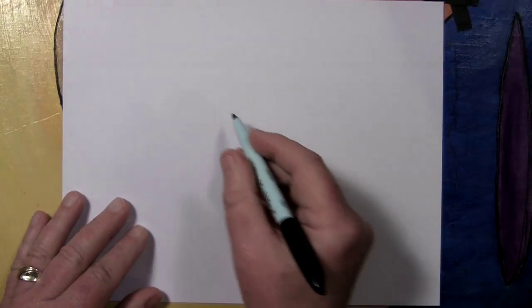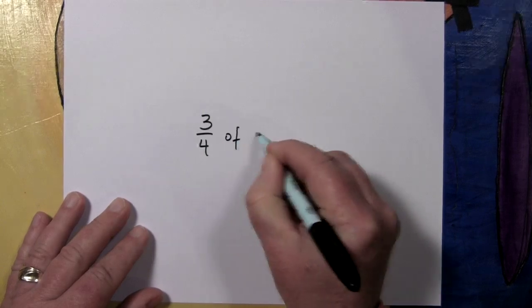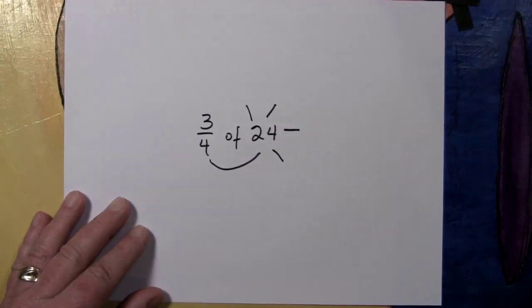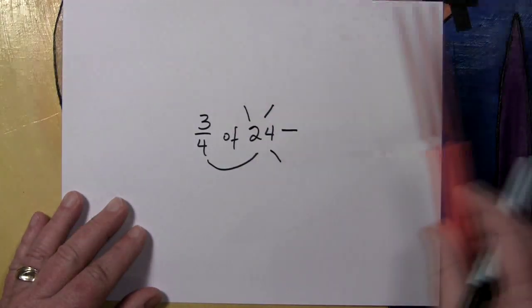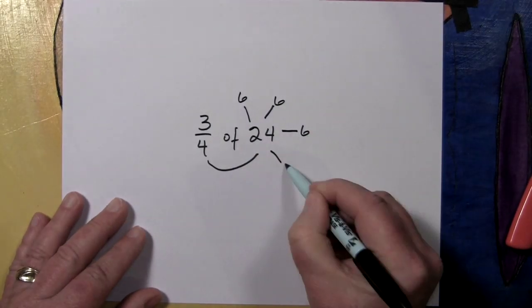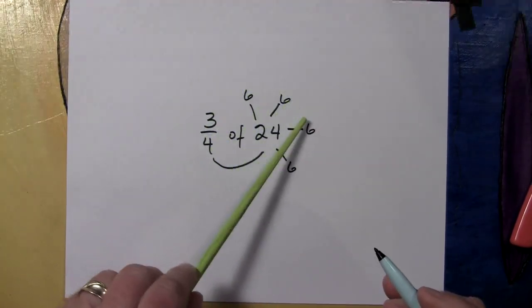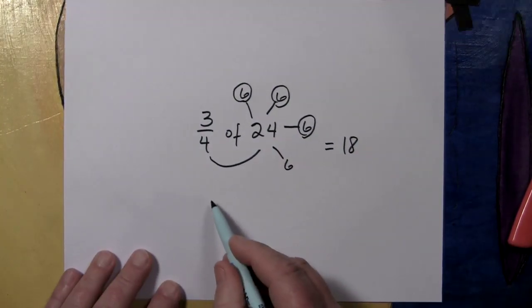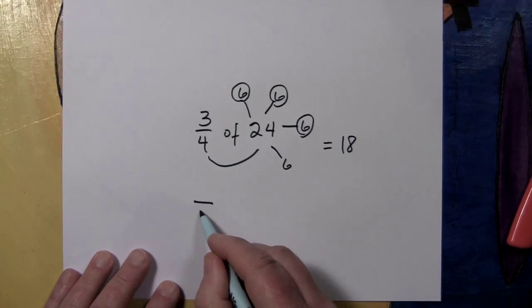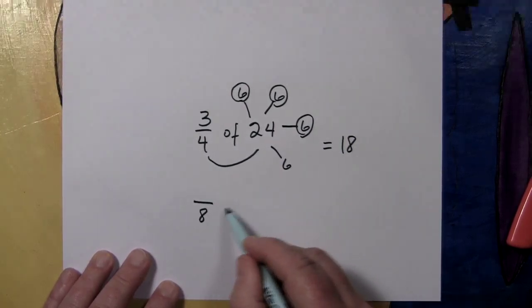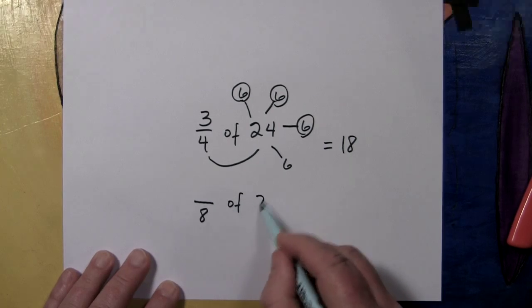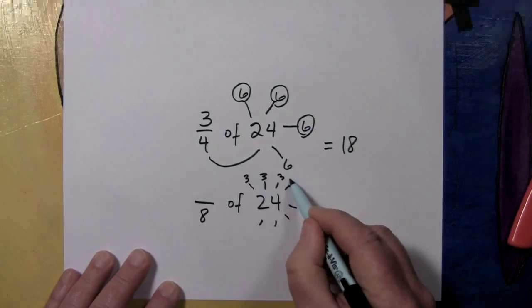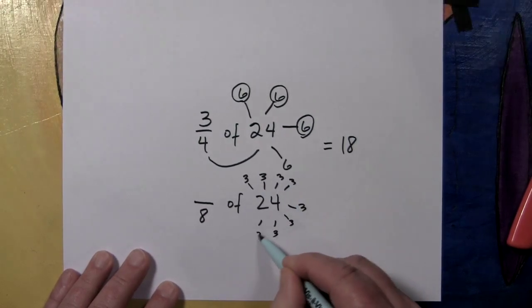Now one last point that I want to make. What if we were finding three fourths of that 24? The four does its magic work of cutting. It cuts up the 24 into four parts. Then the three does its choosing, and we get 18. But my question is, what if we did some cutting with twice as many parts? And we had eight as our cutter. We saw before that each one of those would be three.